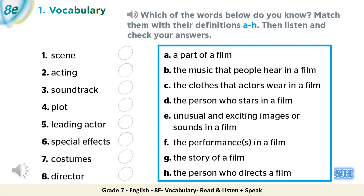Then listen and check your answers. 1. Scene — A: a part of a film. 2. Acting — F: the performance or performances in a film. 3. Soundtrack — B: the music that people hear in a film. 4. Plot — G: the story of a film. 5. Leading actor — D: the person who stars in a film. 6. Special effects — E: unusual and exciting images or sounds in a film. 7. Costumes — C: the clothes that actors wear in a film. 8. Director — H: the person who directs a film.